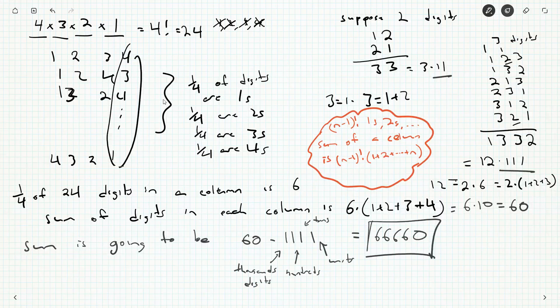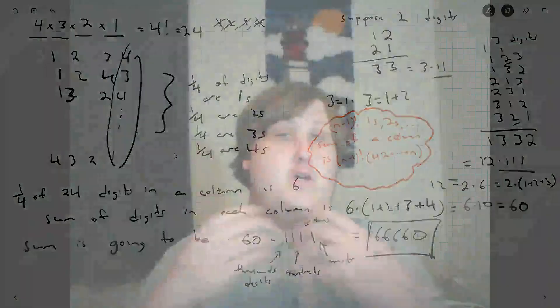So the sum is going to be 60 times 1 for the thousands digits being added up, the hundreds, the tens, and the units. So this is just going to be 66,660. Now we could probably use some more complete sentences, but ultimately there it is. We noticed a smaller pattern. We generalized it a little bit. And I'd say that's a little faster and less error prone. Especially, they took away our calculator.